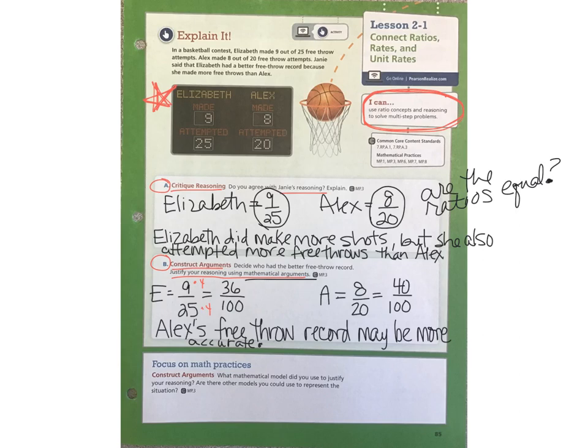For Alex, he made 8 out of 20, which is equivalent to 40 out of 100 if you multiply both parts of Alex's ratio by 5. So while Elizabeth made more shots out of the ones that each of them took, when you look at their record of what would be expected if they each took 100 shots, Alex's free throw record may be more accurate. Just some things to think about as we go through this lesson.